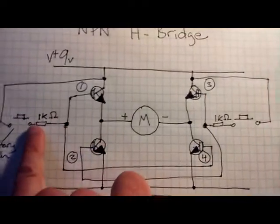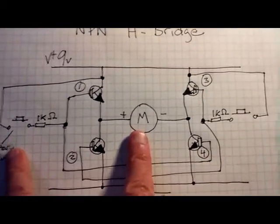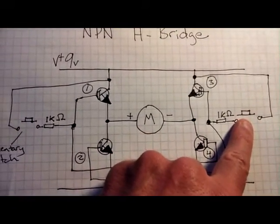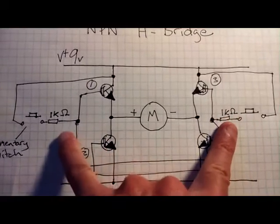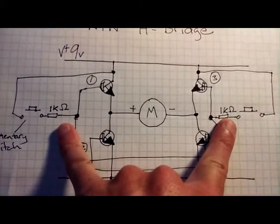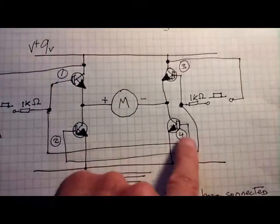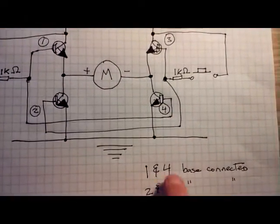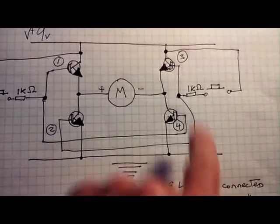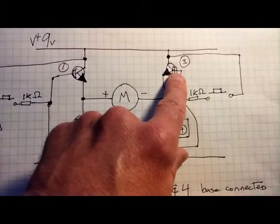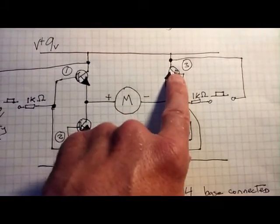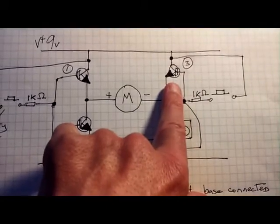emitter, base, collector. We've got two momentary push-button switches indicated here, and 1K ohm resistors coming out of those switches. The base of 1 and 4 are connected, and the bases of transistor 2 and 3 are also connected.